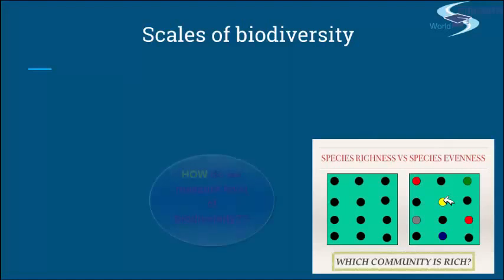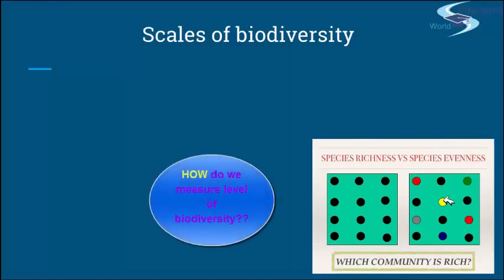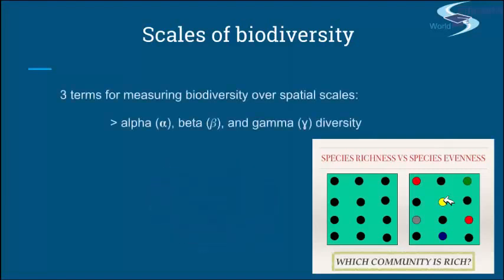A second question would be how you're going to measure the richness, which we obviously appreciate a lot. Mr. Whittaker was the one who, in the 1970s, defined the basic three terms to measure diversity in respect to its species richness, and he named them alpha, beta, and gamma diversity.